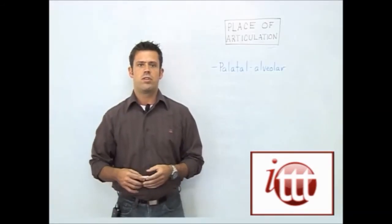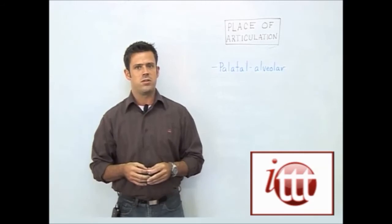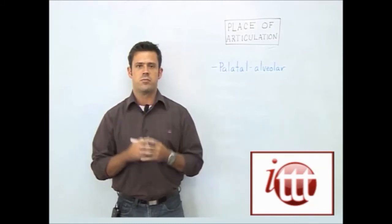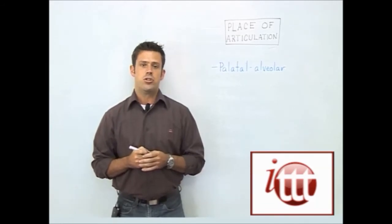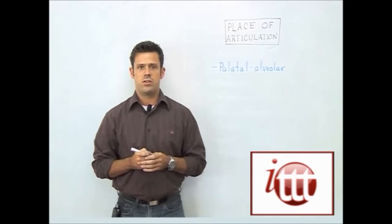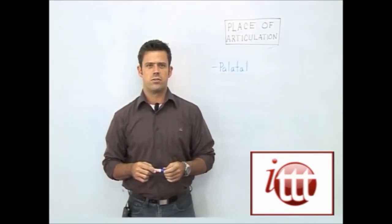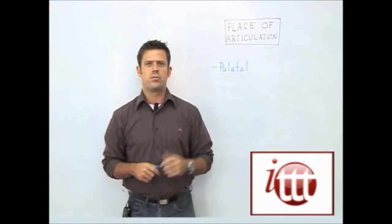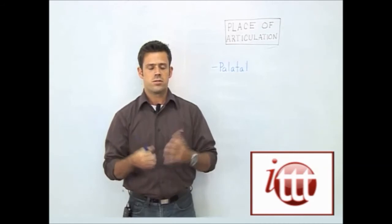Palatalveolar sounds have the tongue moving ever so slightly back in the vocal tract, but not quite back to the soft palate. If you compare these sounds to those of the alveolar group, you should be able to feel the tongue moving just a bit slightly back. The sounds in this group include SH, the ZH sound, as well as CH and J. Moving further back, we have our palatal sound — there's only one, and that is the Y sound. Here, the tongue is raised high up against the palate in order to make that sound.